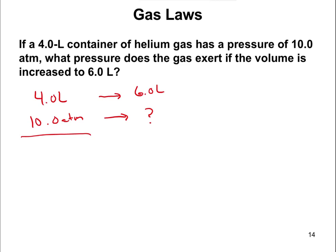Before doing the math, let's figure out if the pressure is going to go up or down. We know PV equals nRT. Pressure and volume are on the same side of the equation, which means they're inversely proportional — one goes up, the other goes down. Since our volume goes up, the pressure has to go down, so we should get a number less than 10 atmospheres.